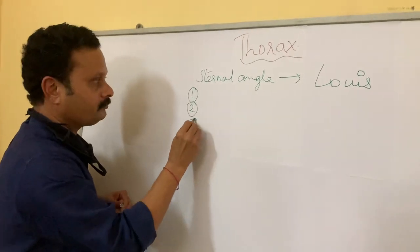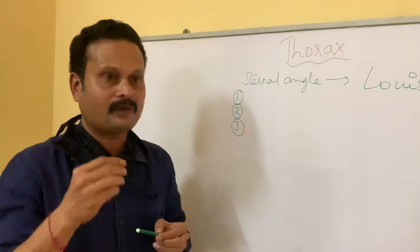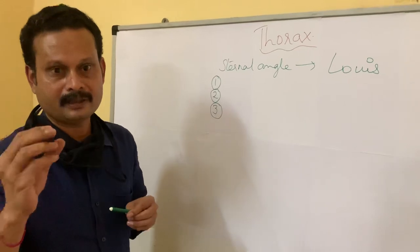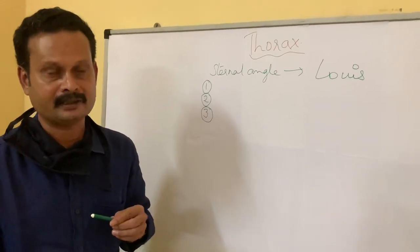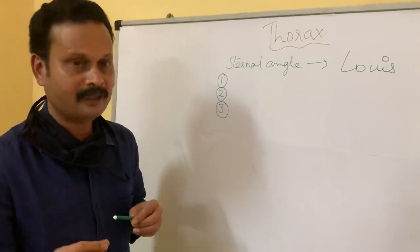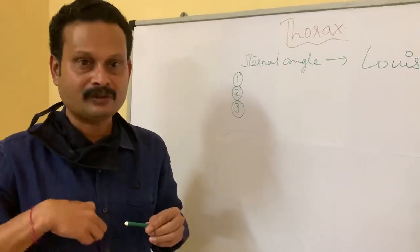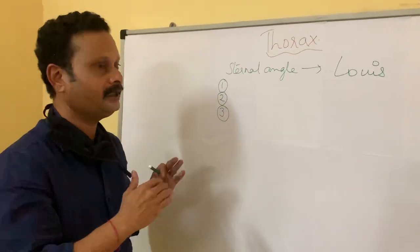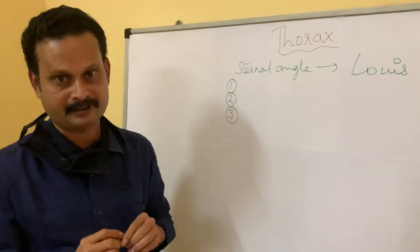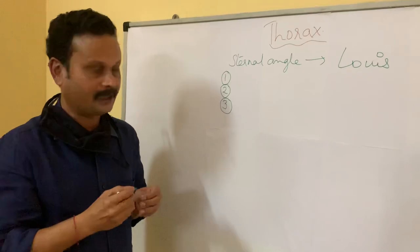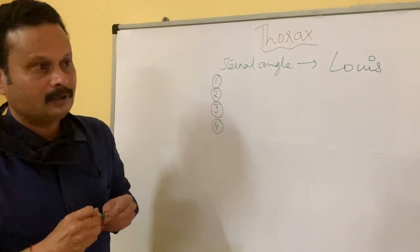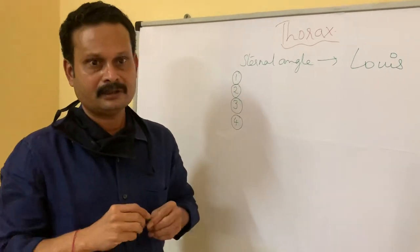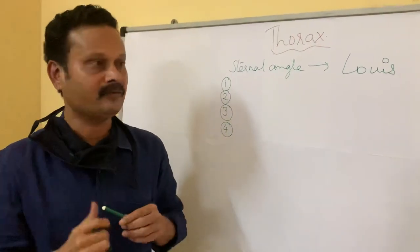The third importance: the thoracic duct, which is the largest lymphatic duct, collects lymph from a lymphatic sac called the cisterna chyli in the abdomen at the level of L1. From there, the lymph traverses through the thoracic duct from below upwards, and on reaching the sternal angle it deviates from the right side to the left side. The fourth importance: the sternal angle forms an important line of junction between the superior and inferior mediastinum.